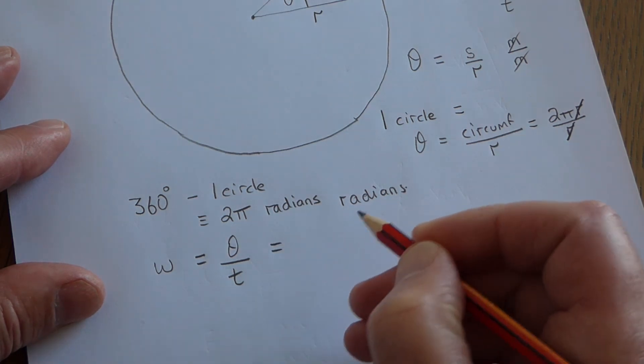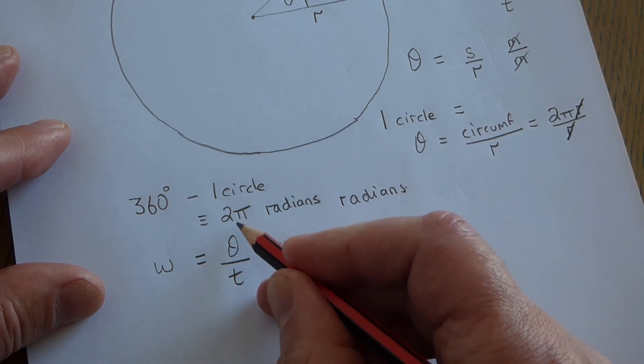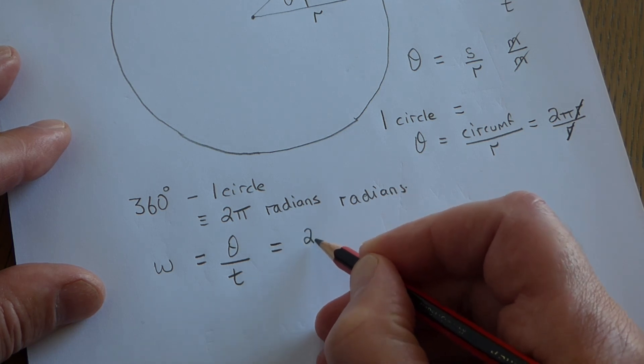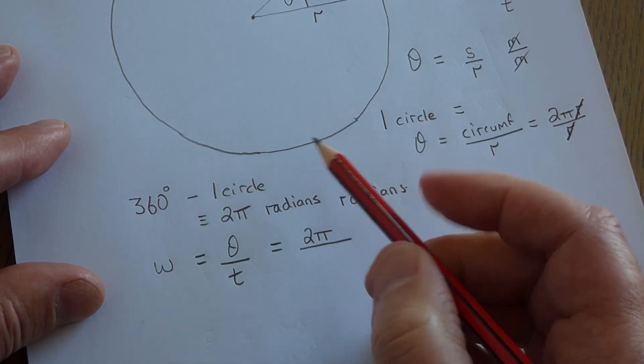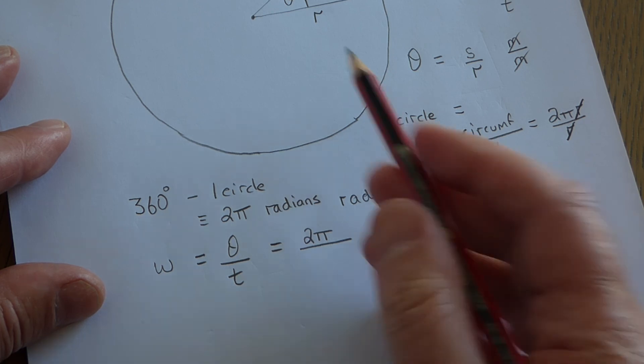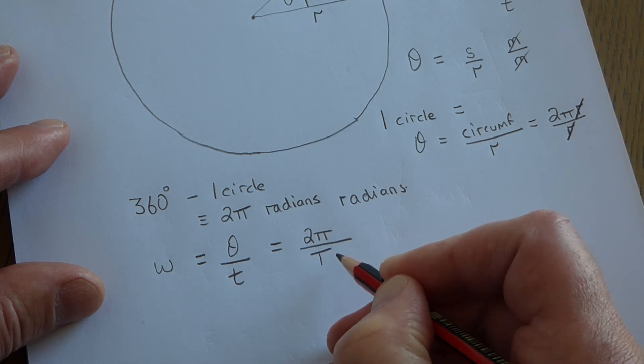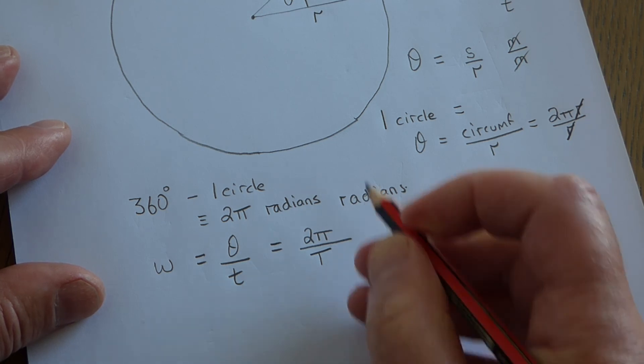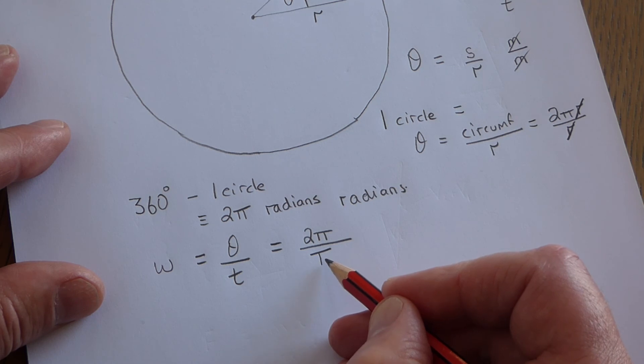We've seen that there's a special case. If you allow the object to go a complete circle, then the angle swept out is 2π radians. So let's put that in instead. And the question then arises, well, if I allow my object to go one complete circle, how long does it take to do one complete orbit? And the answer is the periodic time of the orbit. So for the moon going round the Earth, the periodic time would be 27 days. If it was the Earth spinning, the periodic time would be a day. If it was the Earth going round the sun, it would be a year.